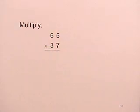In this problem, we're asked to multiply two whole numbers. We'll multiply 65 times 37.